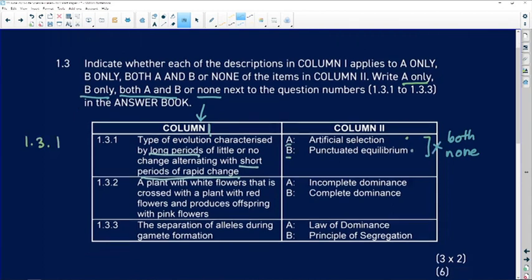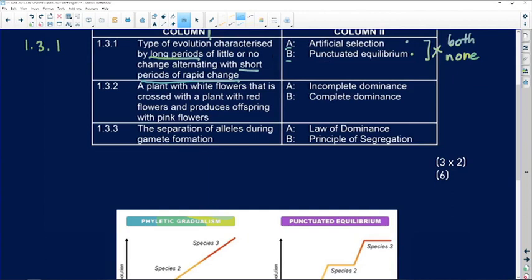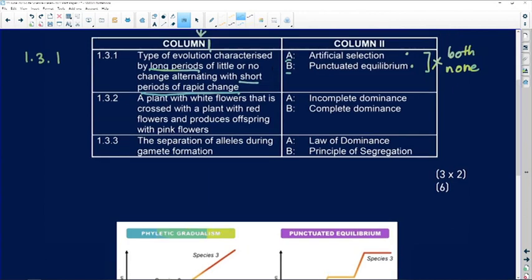Let's remind ourselves about what artificial selection is. Artificial selection is when humans select the alleles that we want to see in the offspring that's going to benefit us.